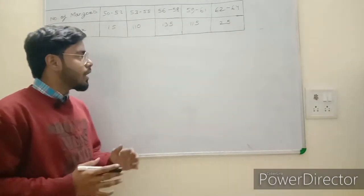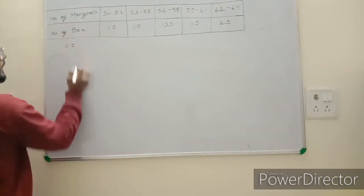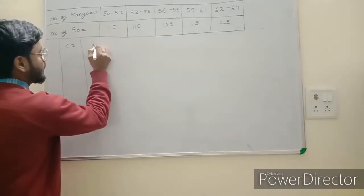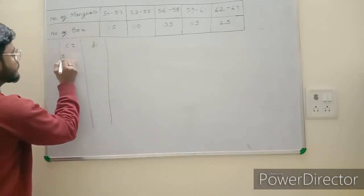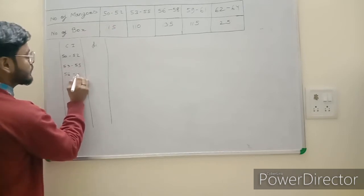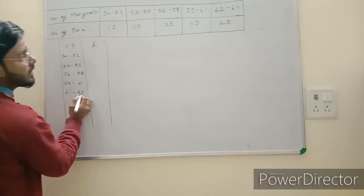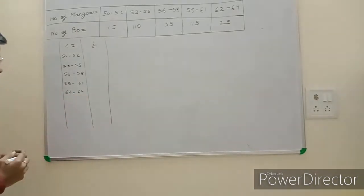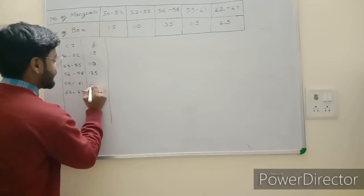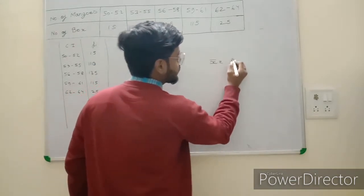For the simple method, I'm taking the class interval (CI) and frequency. The class intervals are 50–52, 53–55, 56–58, 59–61, and 62–64, with frequencies 15, 110, 135, 115, and 25.